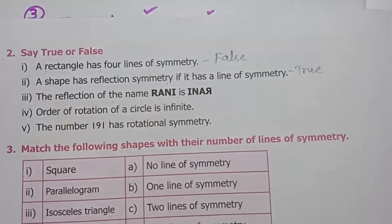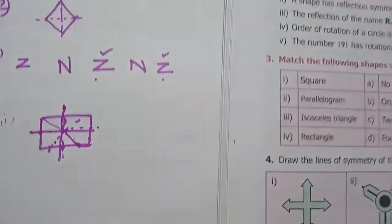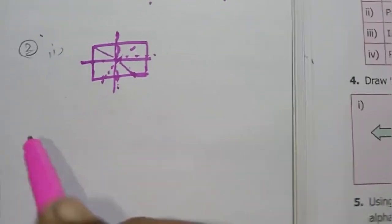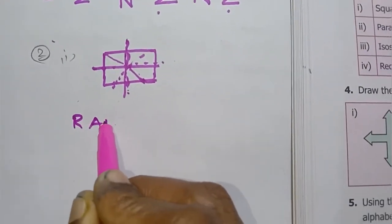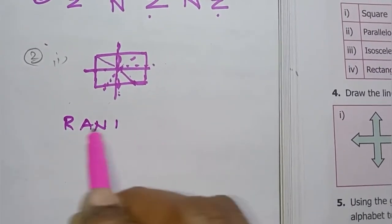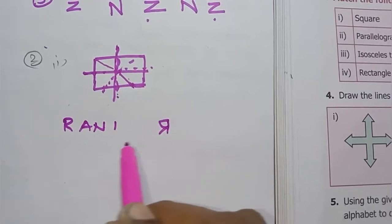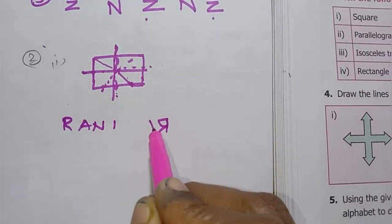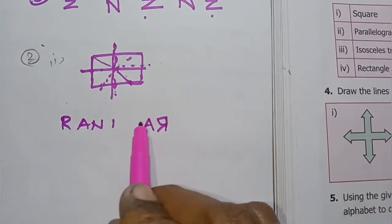Third one: the reflection of the name Rani. Reflecting each letter — R, A, N, I — to find the reflected image of the name Rani.